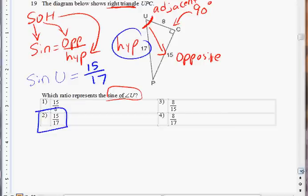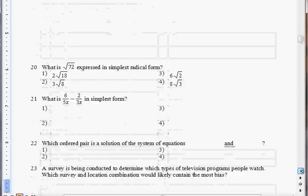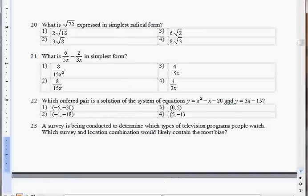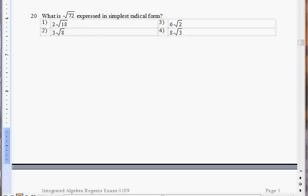Let's move on to the next question, number 20. Number 20, we have a radical here, square root of 72, and the question is, how do you express it in the simplest radical form?